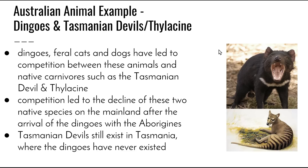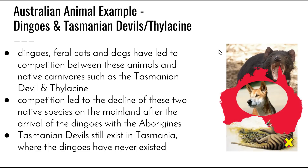An Australian animal example is the introduction into Australia of dingoes, and more recently feral cats and foxes, which has resulted in a reduced population of many native carnivorous animals less successful in competition for the same resources. Thylacines — our Tasmanian tigers — and Tasmanian devils, for example, were found on the Australian mainland before the dingo arrived with the Aborigines. Competition led to their decline on the mainland, but the Tasmanian devil still survives in Australia as no dingoes have made their way there. The thylacine is now completely extinct, and the Tasmanian devil is on the endangered list due to this competition.